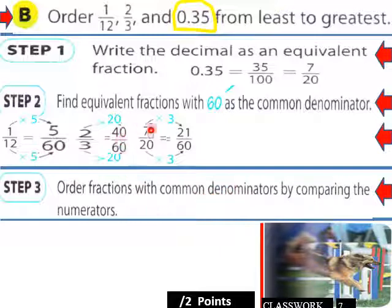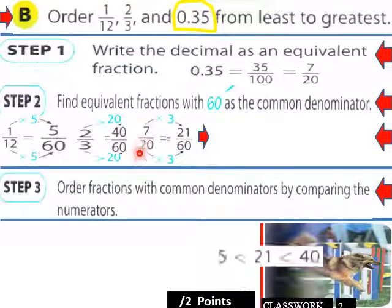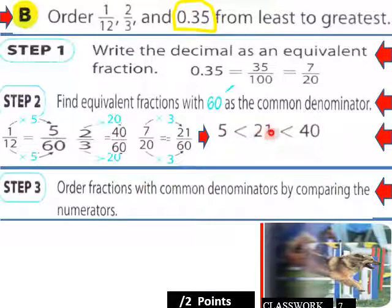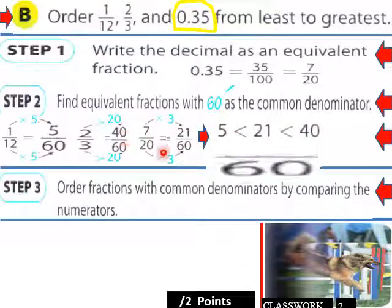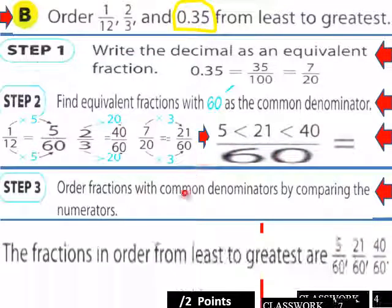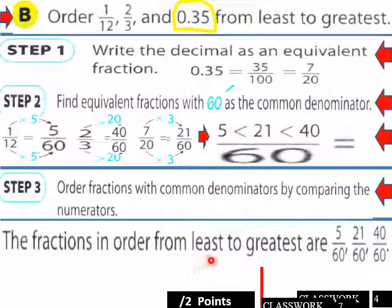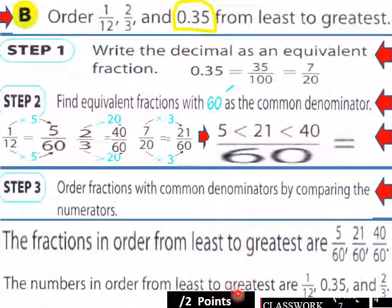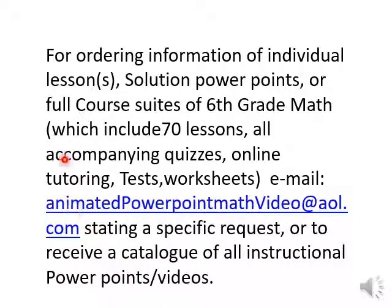Order fractions with a common denominator by comparing the numerators. Since 5 is less than 21, which is less than 40, all over 60, the order from least to greatest is 5/60, 21/60, and 40/60. So the original numbers in order from least to greatest are 1/12, 0.35, and 2/3. That was lesson 3.3 part one — part two and part three are available. Thank you very much.